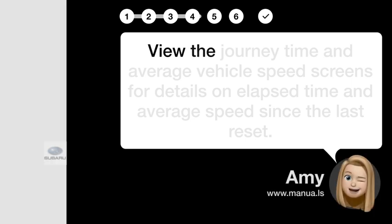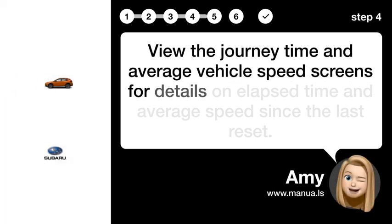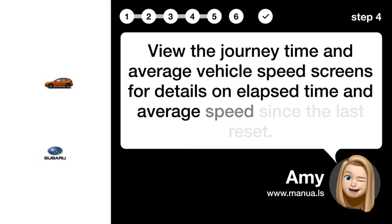Step 4: View Journey Details. View the Journey Time and Average Vehicle Speed screens for details on elapsed time and average speed since the last reset.